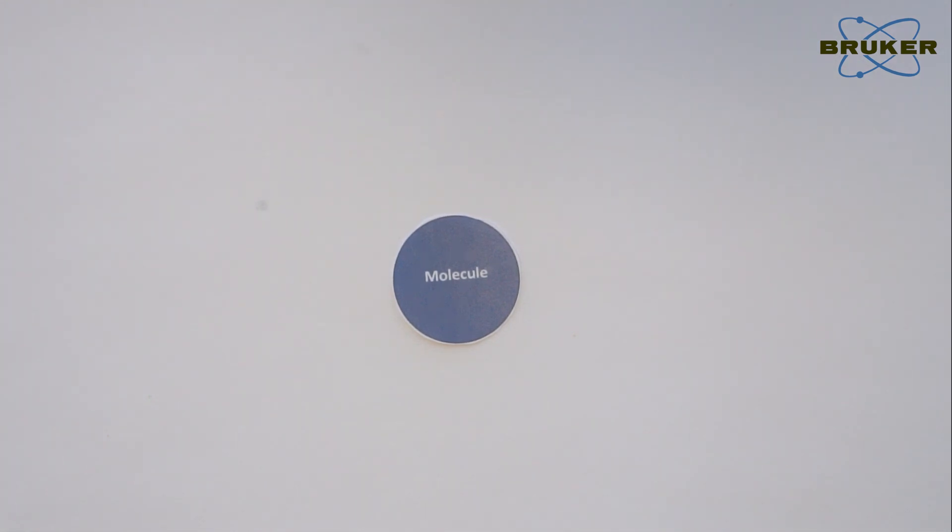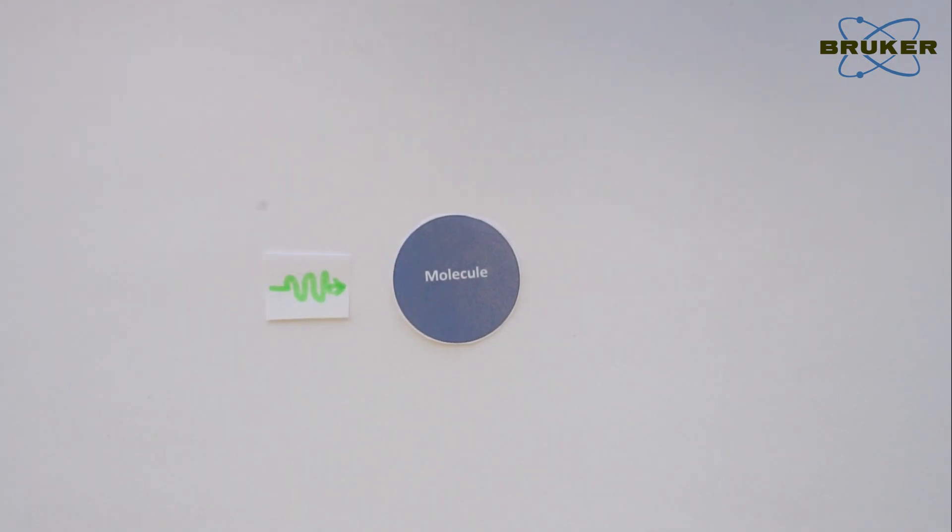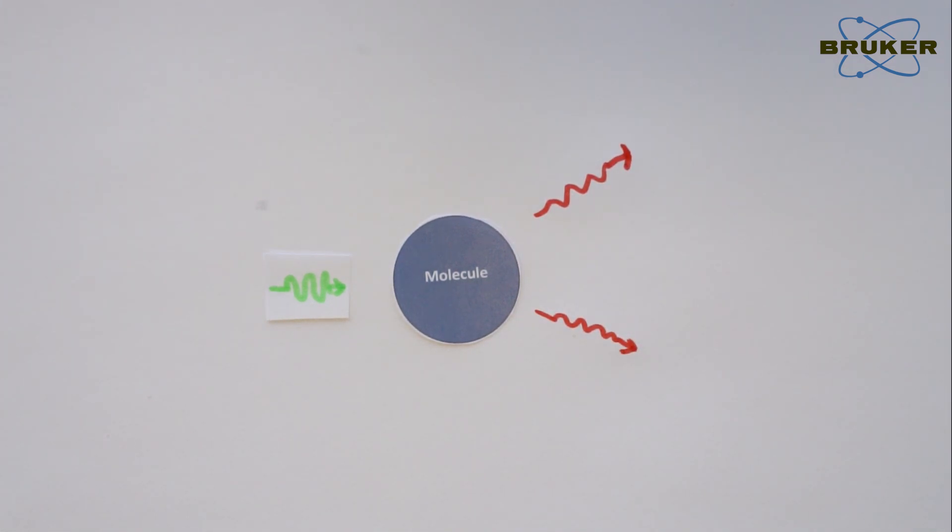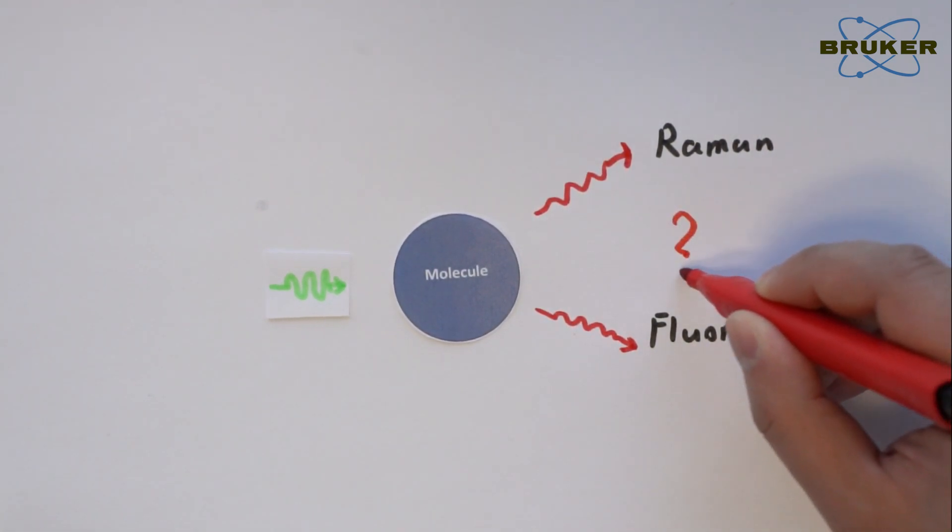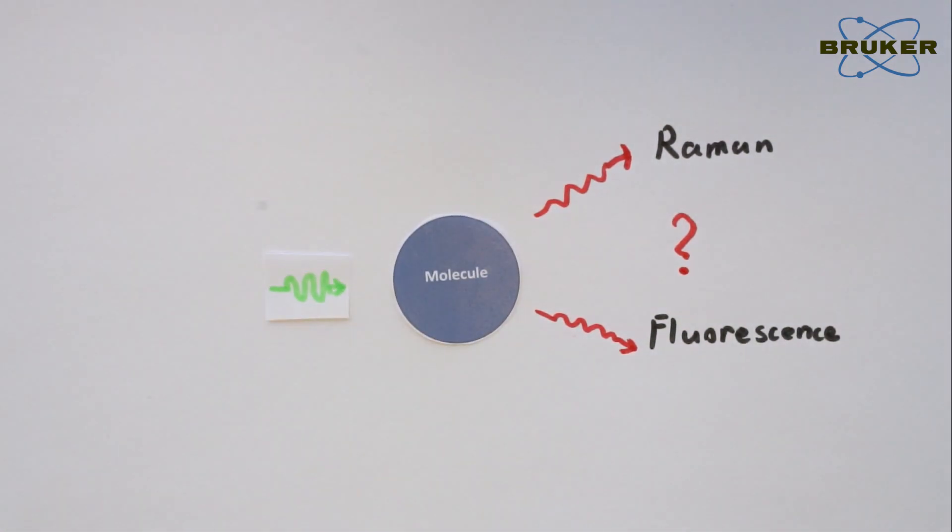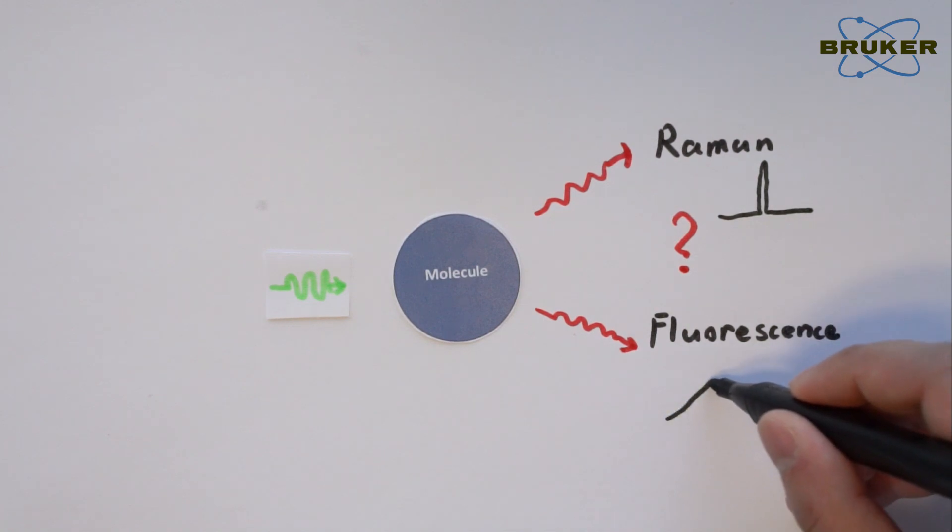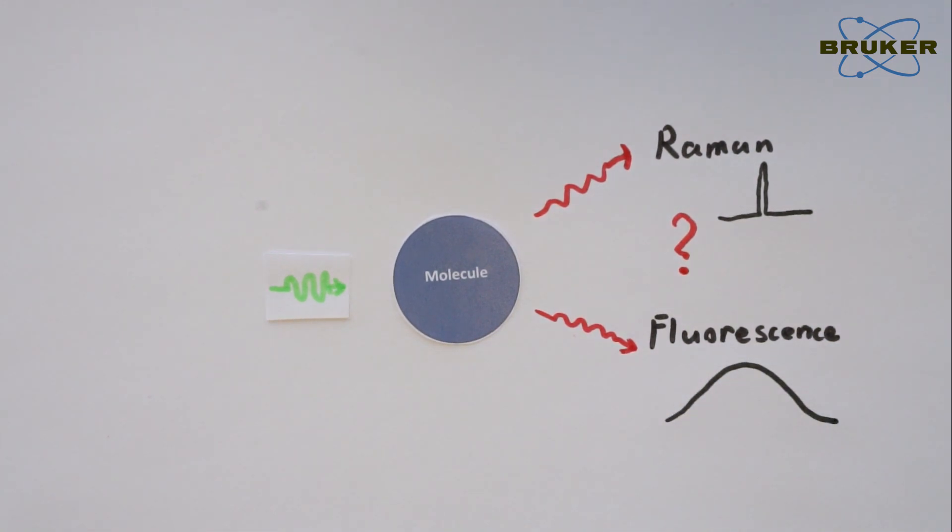The fluorescence effect is fundamentally different from Raman scattering process. Although both effects result in photons with longer wavelengths, and a detector will not discriminate between Raman scattered light and the light emitted by fluorescence. A fluorescence spectrum appears much broader than Raman and does not hold information of molecular vibration.